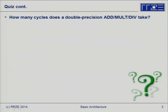How many cycles does a double-precision add, multiply, or divide take on a modern workstation processor at around 3 GHz? A double-precision add takes 3 cycles on a modern Intel processor. The good news is we can start another add every cycle if operations are independent, so throughput is one result per cycle, but latency end-to-end is 3 cycles. A multiply takes about 5 cycles.